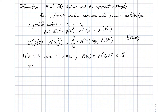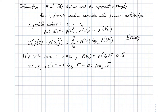The information content — the number of bits we need to communicate the result of a coin flip — is computed as: minus 0.5 times log base 2 of 0.5, plus the same thing repeated. If you work through that, it comes out to 1. So if I'm flipping a fair coin, I need one bit to communicate whether I got heads or tails.